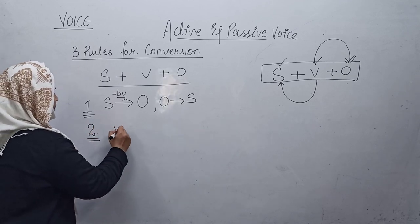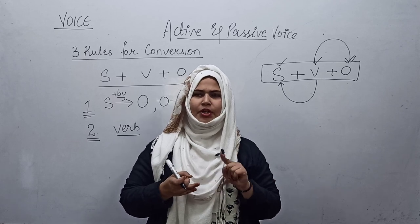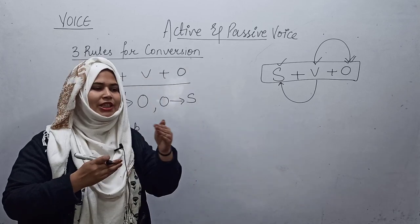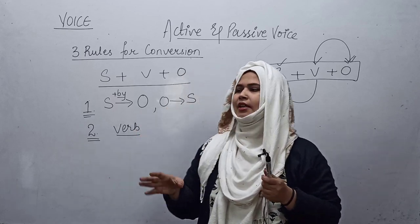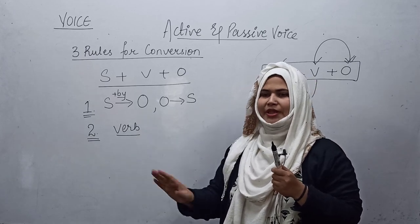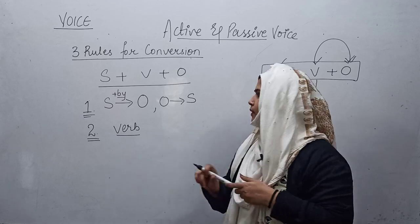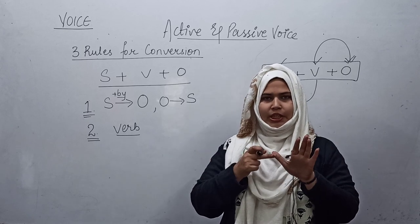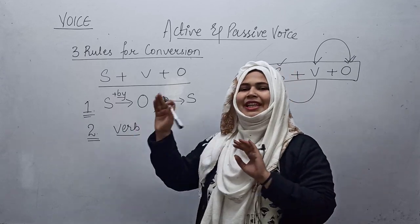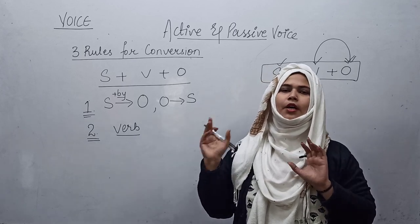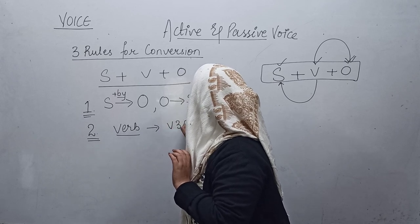The second rule states: the verb must change. Your verb will tell you which tense it is. There are many forms of verb — 1st form, 2nd form, 3rd form, 4th form (the -ing form), and 5th form (where we add s/es). Whatever form the verb is in, we will change it to the third form — the past participle form of the verb.